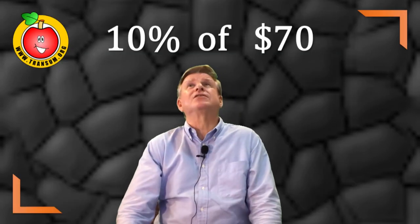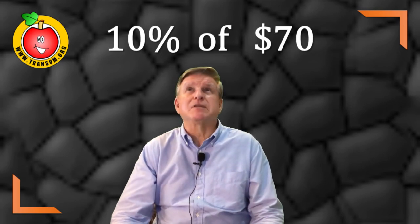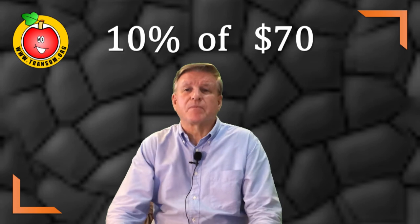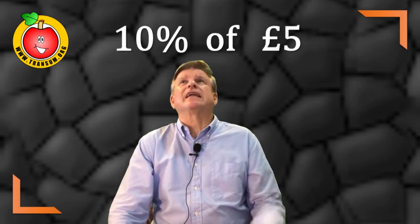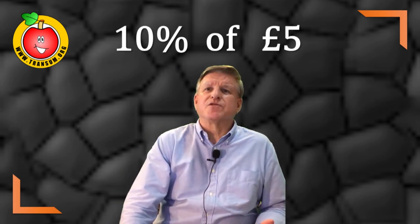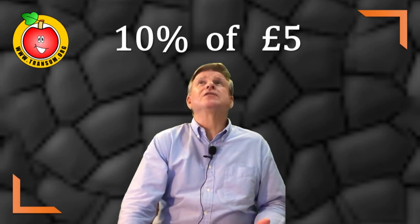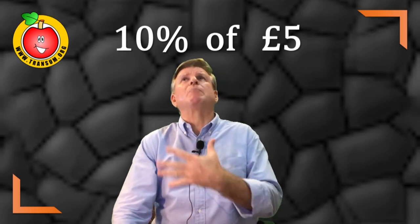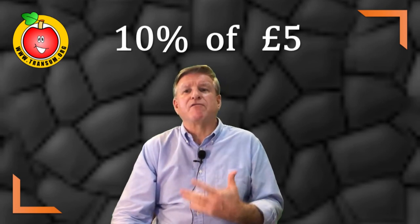So 10% of 70. It's very easy to divide by 10. 10% of 70 dollars is $7. 10% of five pounds. That's one tenth of five pounds. That's 50 pence. Because five pounds is like 500 pence. So you're dividing 500 by 10 and the answer would be 50, 50 pence.